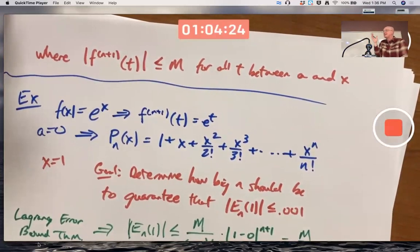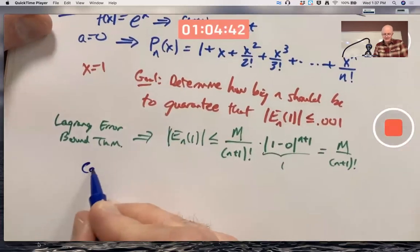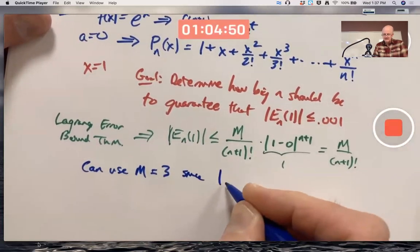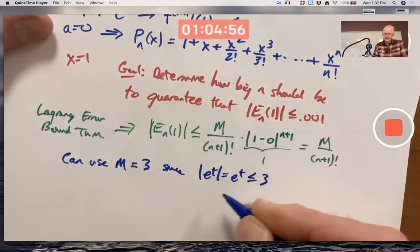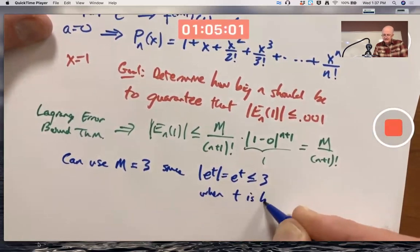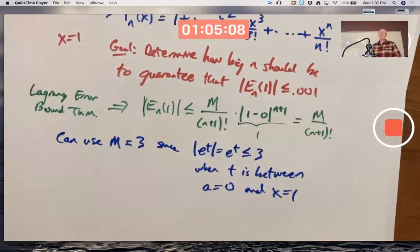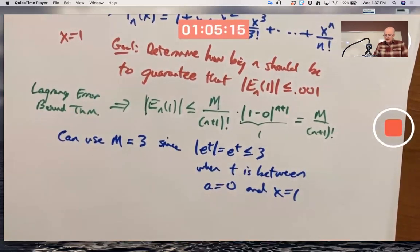I could use e as an upper bound, e itself. But wait a minute, that's really cheating. I'm trying to approximate e. Okay, just use something simpler, like 3. You could use 2.72 or even 2.718. Can use M equal to 3, since e to the t in absolute value, which does equal e to the t because it's positive, is less than or equal to 3 when t is between a equals 0 and x equals 1. So do that, use M equal to 3.